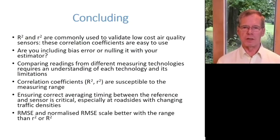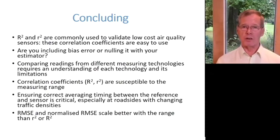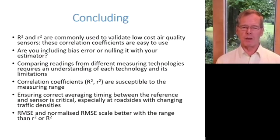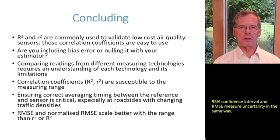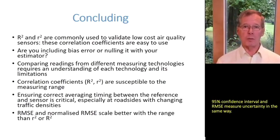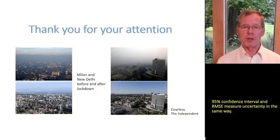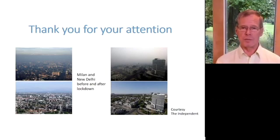In conclusion, R-squared is easy to use — but ask yourself: are you nulling both the offset and the gain, or taking them as zero offset and unity gain when calculating R-squared? When comparing different technologies, remember you are often comparing fundamentally different measurements. R-squared is very susceptible to the range of measurement, and you must average over the same period as your reference system. Our take-home message: RMSE is the preferred measurement over R-squared. Thank you for your attention, and here are a couple of pictures of cities before and after lockdown. Thank you very much.